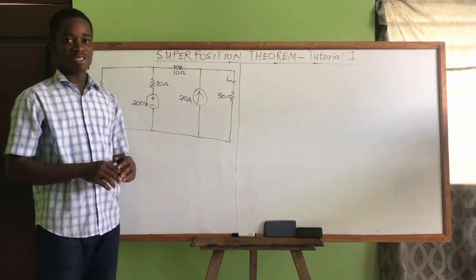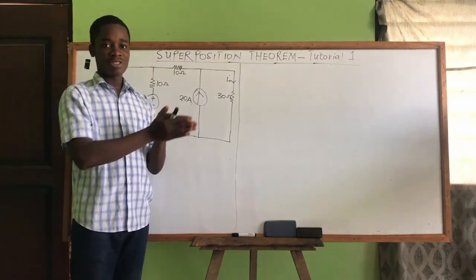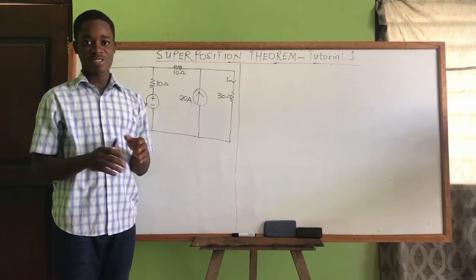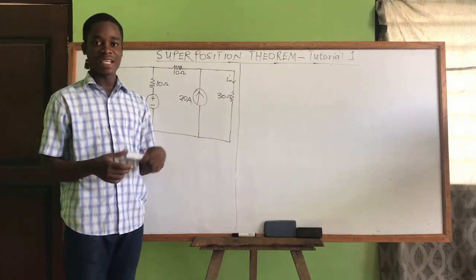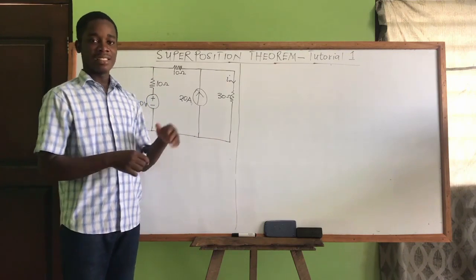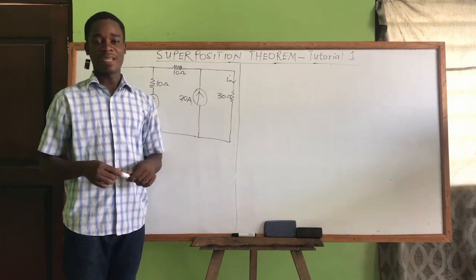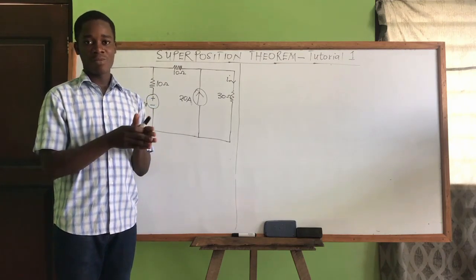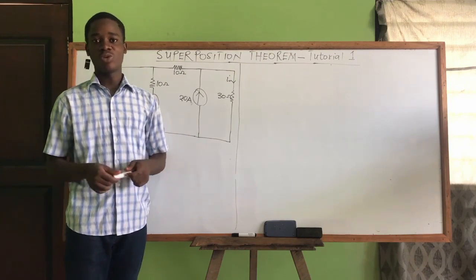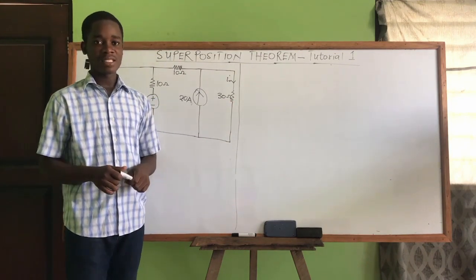It's all about letting the sources act independently. For each configuration, let only one source be active, deactivate the others, find the current or voltage for that element. Then draw your circuit again with the other source active, deactivate all others, find the current or voltage for that element. Then sum those currents or voltages algebraically — that gives your total current or voltage for that element.